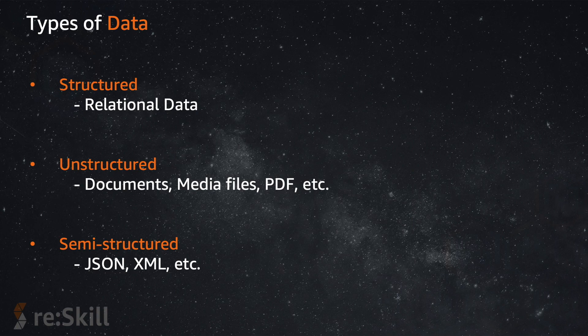When we talk about data, there are different types. There is structured data, semi-structured data, and unstructured data — these are broad classifications that cover everything. Structured data is nothing but relational data, like RDBMS. From the product side, you can think about MySQL, Oracle, RDS in Amazon, or Aurora. These are structured databases where you have data in row-column format and can query it using SQL. You define the schema first, and then you put the data in. Unstructured data covers all different kinds of data that are not structured — like documents, media files, PDFs, etc.